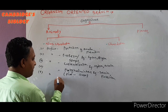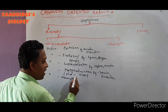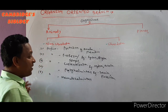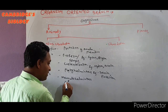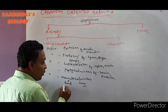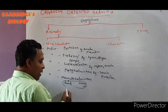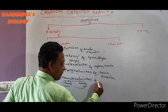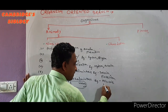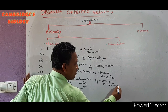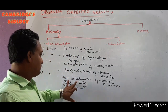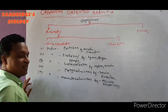The next phylum is Nematohelminthes — 'nemato' means round, 'helminthus' means worm, so these are roundworms. Examples: Ascaris and Filaria worm. Filaria belongs to Phylum Nematohelminthes.